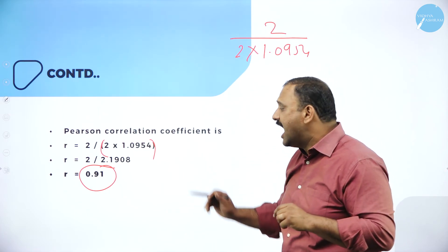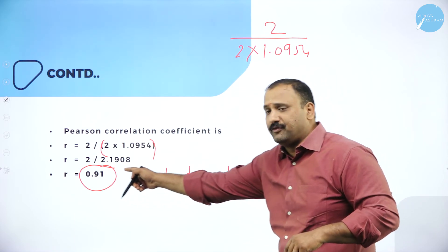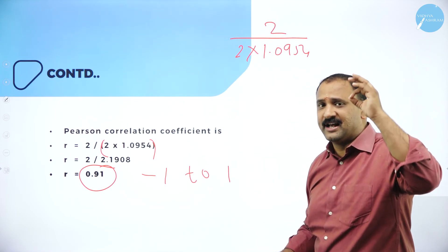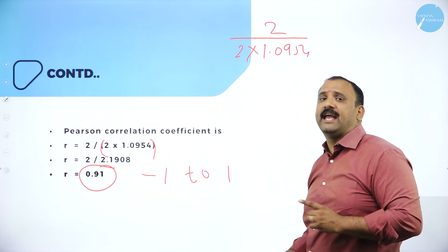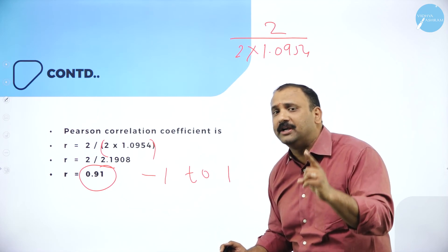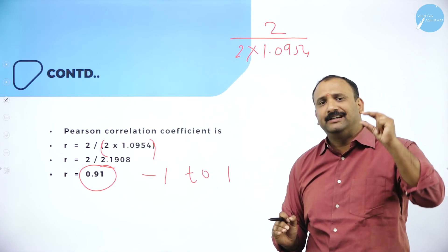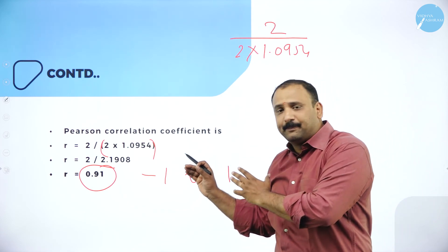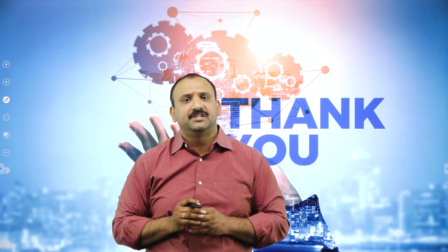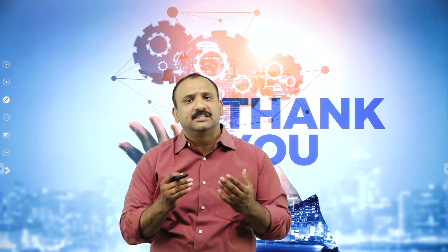The answer is r equals 0.91. As I mentioned, r should range between minus 1 and plus 1. Since 0.91 lies within that range, the problem is correct and the solution is verified. Always check the answer before submitting. This problem is simple — fit in the values, find the square root, apply the Pearson correlation coefficient formula. With this we conclude today's session. In the coming session we shall see other types of problems in correlation. Stay tuned, stay blessed, and stay enlightened.